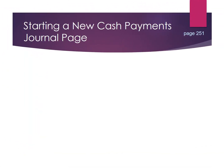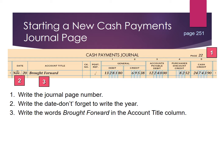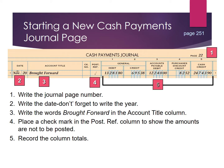Starting a new cash payments journal page: write in the new page number — in this case, page 22. Bring forward the date from the previous page, November 20th, and don't forget to write in the current year. Under the account title, write 'brought forward.' Leave the check number column blank and place a check mark in the post reference column. Record the debit and credit amounts, then verify that debits equal credits.